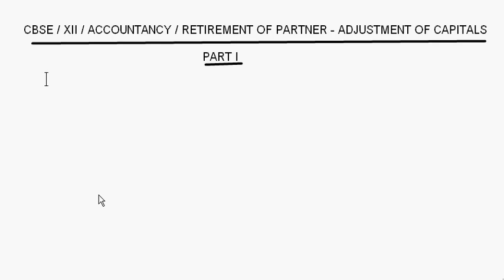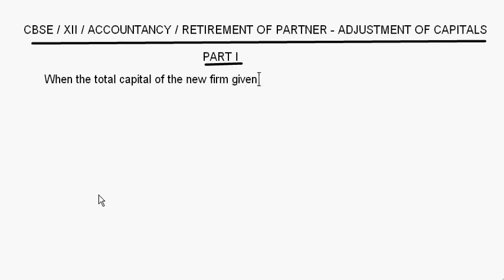We are going to look at three cases for adjustment of capitals. The first case is when the total capital of the new firm is given. When the total capital of the new firm is given, the first step is to find out the present capital of the continuing partners.